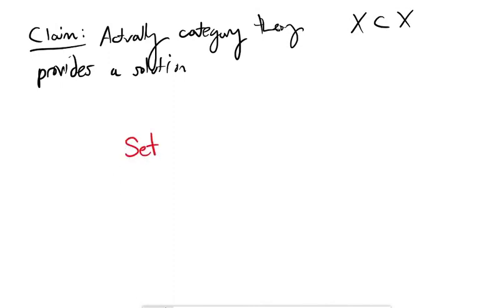The answer in category theory is that the mathematical object representing all sets is actually a category. We define this notation, which I'm not a big fan of because it's a bit esoteric, but this is the mathematical symbol for the category of all sets.